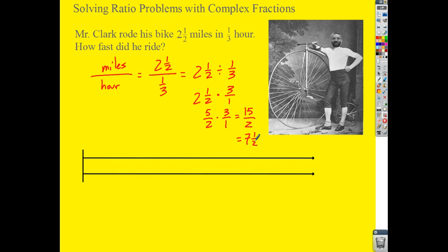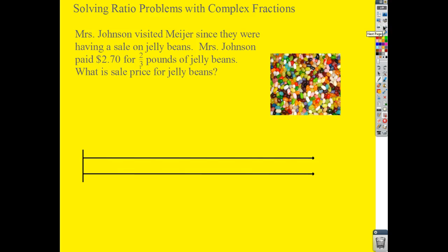Find the method you have the most success with. I'd suggest starting with the number line, and if you're feeling good about dividing fractions, go ahead and use that. Let's do one more: Mrs. Johnson visited Meijer during a sale on jelly beans. She paid $2.70 for two-thirds of a pound. What is the sale price? LB is the abbreviation for pound — I'm not sure why, maybe one of you can look that up.